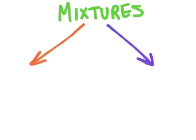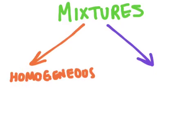The first type of mixture is a mixture where you cannot see the different parts of the mixture. We call this type of mixture a homogeneous mixture. The root word homo means same, and so these mixtures appear to be the same throughout the mixture. You can't see the different parts of the mixture.